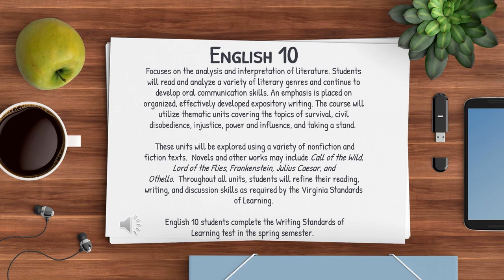These units will be explored using a variety of non-fiction and fiction texts. Novels and other works may include Call of the Wild, Lord of the Flies, Frankenstein, Julius Caesar, and Othello. Throughout all units, students will refine their reading, writing, and discussion skills as required by the Virginia Standards of Learning. English 10 students complete the Writing Standards of Learning test in the spring semester.